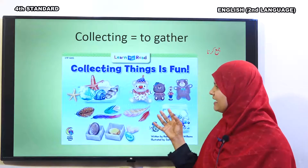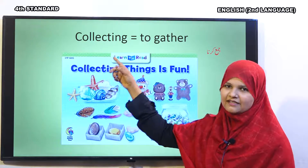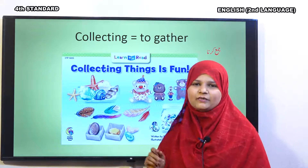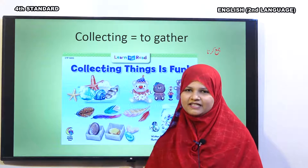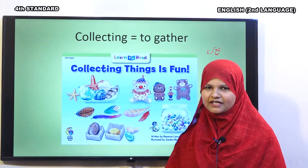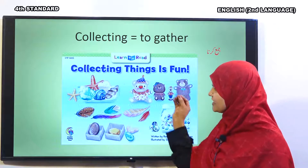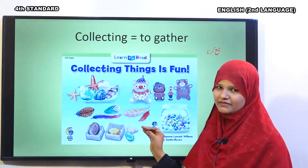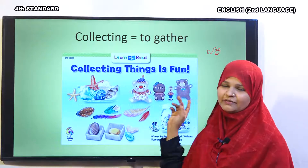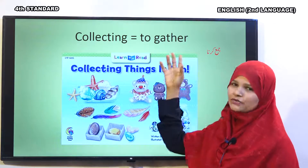Next, collecting. Collect means jamaa karna. To gather things is called collecting. Yahaan par bahut saari chizein jamaa ki hui hain. Bachon mein aksar aadat rehti hai alag-alag tarah ki cheezon ko jamaane ki. Children always like to collect toys. Collecting thing is a fun. Collecting means to gather things, jamaa karna.